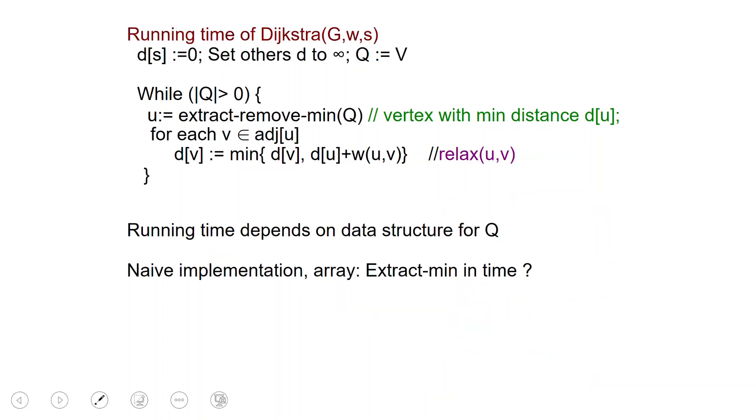The running time for Dijkstra, the algorithm here depends on the data structure for Q. So the naive implementation without using anything fancy like heaps is just a simple array. And now extracting the minimum would cost you a linear time. And so the running time for this implementation would be V square plus E. This is just because for every node in the graph, we have to run the extract min operation, and E is just to go through all the edges here.